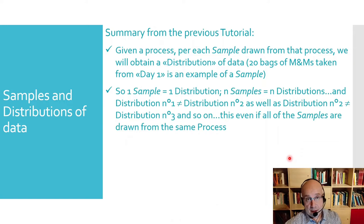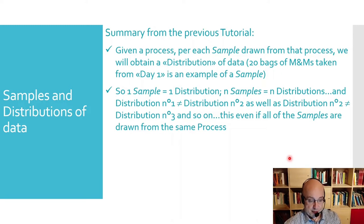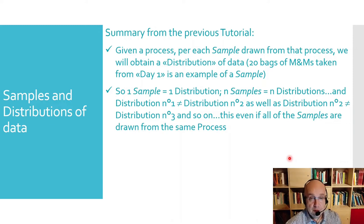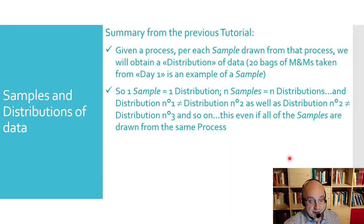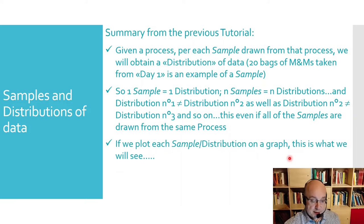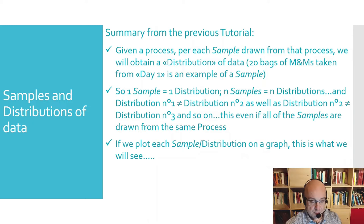For each sample we can obtain a distribution. If I have N samples I can obtain N distributions, and distribution number one differs in shape and position from distribution number two, which is relevant to our second sample. Distribution two also differs from distribution three, which derives from sample number three. These differences occur even if all of the samples are drawn from the same process.